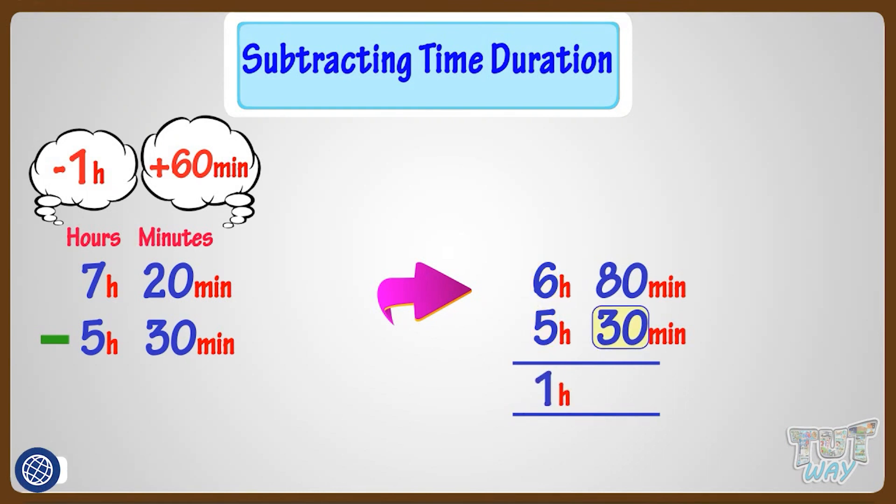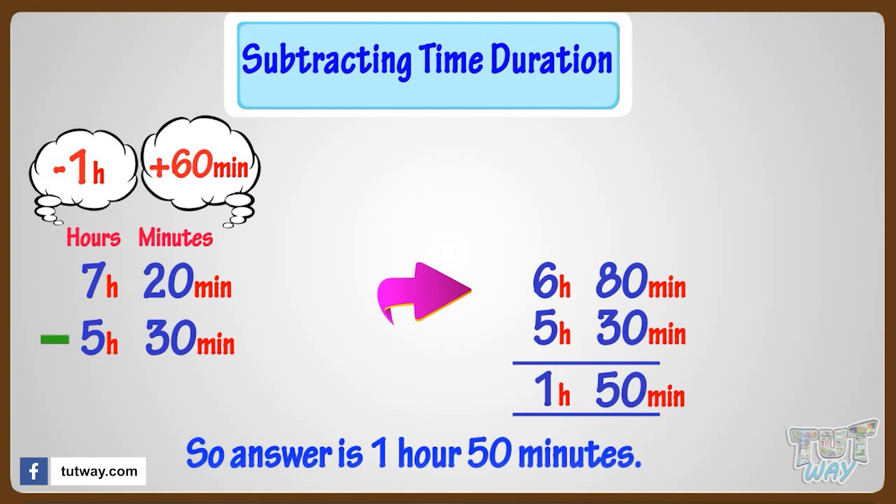And subtracting 30 minutes from 80 minutes, we get 50 minutes. So our answer is 1 hour, 50 minutes.